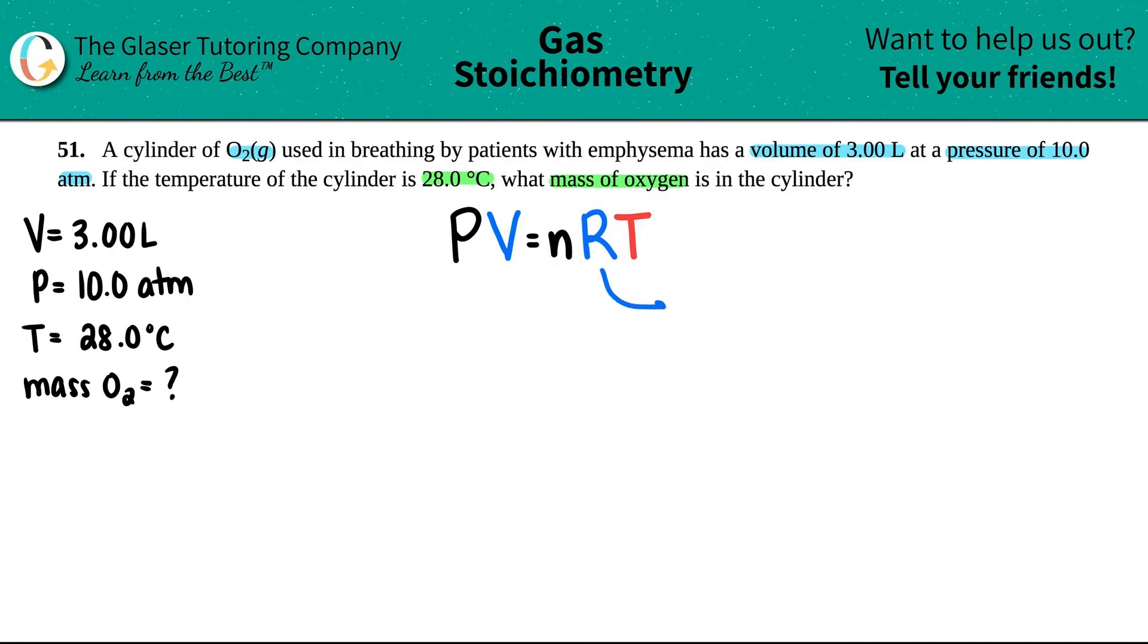Remember, all the units are in that R value, so 0.0821 is the constant number that you have to memorize, and that's atm times liter divided by mol times Kelvin. So the pressure has to be in atm, and cool, they gave it to us in atm, so check that off. Volume has to be in liters, and thank goodness they gave us liters, so that's good.